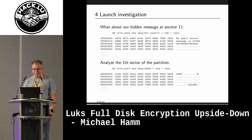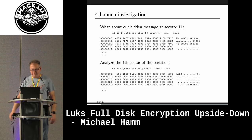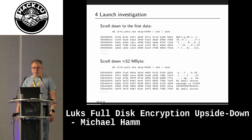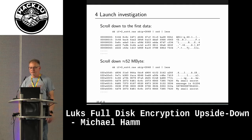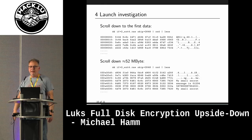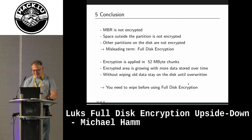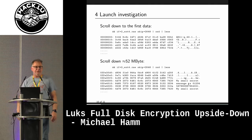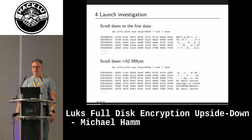Scrolling down to the beginning of the partition, you can see the header of the LUKS encrypted partition. Scrolling further to where the data begins, the data at the top of the view is fully encrypted — nothing can be recovered there. But scrolling down to around 52 megabytes, we can see the old small secret message is still on the disk. Everything after the 52 megabytes is not encrypted.